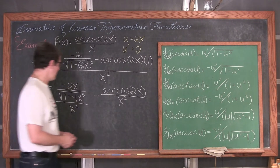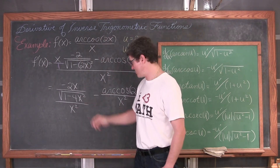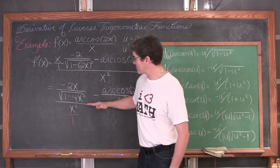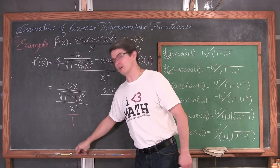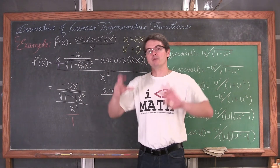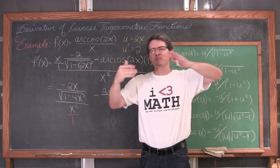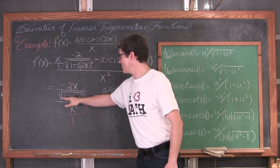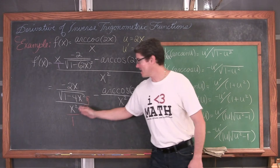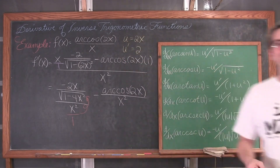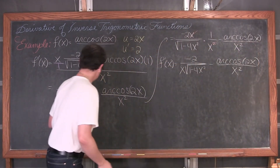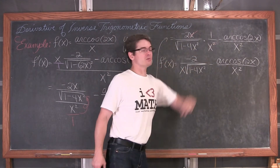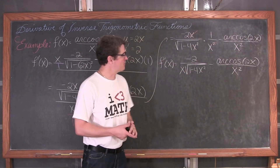Over here we have a fraction divided by a fraction. When dividing fractions, you multiply by the reciprocal of what you are dividing by. So the first part becomes negative 2x over the square root of 1 minus 4x squared times 1 over x squared. The factor of x in the numerator cancels with one of the x's in the denominator, leaving us with negative 2 over x times the square root of 1 minus 4x squared.